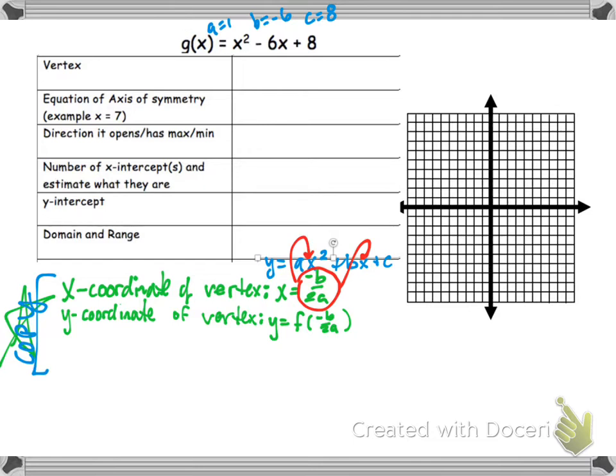So to get the x-coordinate of the vertex, I'm going to take opposite of negative 6, divide that by 2 times 1, because a is 1. That simplifies to give me 3. Now I take that 3, and I plug it back into the function to get my y-value, which gives me a negative 1. So there's the vertex.